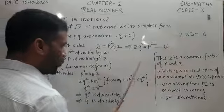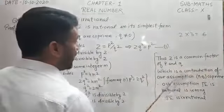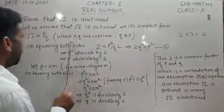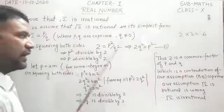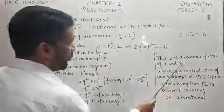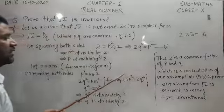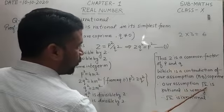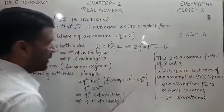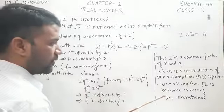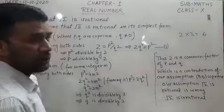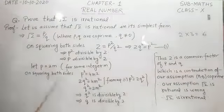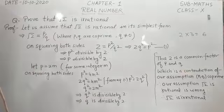But this is a contradiction of our assumption that p and q are co-prime — meaning p and q should not be divisible by any number other than 1, but here both p and q are divisible by 2. This contradiction arises due to our wrong assumption. This means our assumption that root 2 is rational is wrong, therefore root 2 is an irrational number. I hope you will get the solution of this important question.